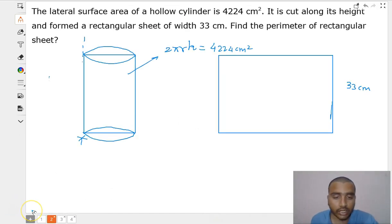So let's start the problem. The problem says the lateral surface area of a hollow cylinder is 4224 cm². It is cut along its height and formed into a rectangular sheet of width 33 cm. We have to find the perimeter of the rectangular sheet.